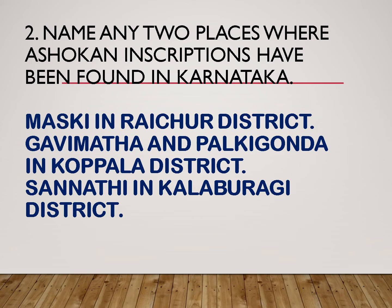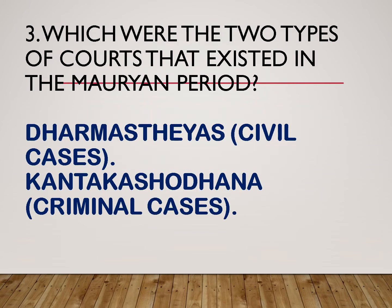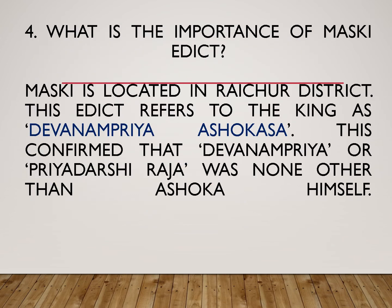Answer: Maski in Raichur district; Gavimata and Palki Gunda in Koppal district; Sanati in Kalaburagi district. Which were the two types of courts that existed in the Mauryan period? Answer: Dharmastiyas, which deals with civil cases, and Kantaka Shodhana, which deals with criminal cases.